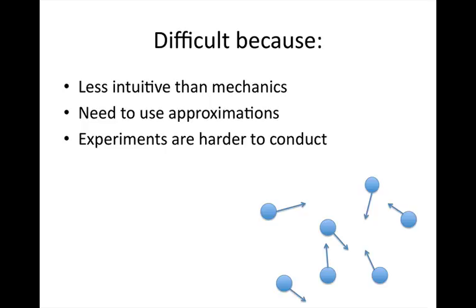Thermal physics is a bit more difficult than mechanics because it's less intuitive. We can't go back to fundamental principles as much. Where possible we will, but some of that is beyond the scope of this course. If you go on and do third year statistical mechanics, you'll be seeing where some of these equations come from. So for thermal physics, we need to use approximations. You'll be seeing one of these today. It also means that often for thermal physics, experiments are harder to conduct. So unfortunately, there'll be a few less demonstrations than there are for mechanics.